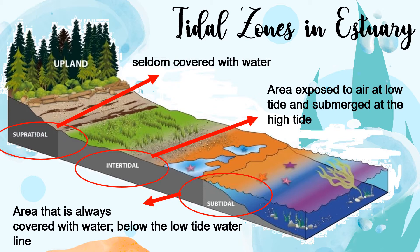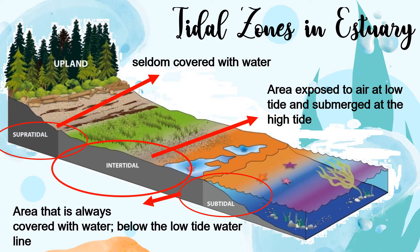According to ecologists, estuaries are usually divided into three tidal zones: supratidal, intertidal, and subtidal. They are subject to changes in water levels, temperature, oxygen content, and level of light. Supratidal is an area seldom covered with water. Intertidal is an area exposed to air at low tide and submerged at high tide. Subtidal is an area always covered with water and is below the low tide line.